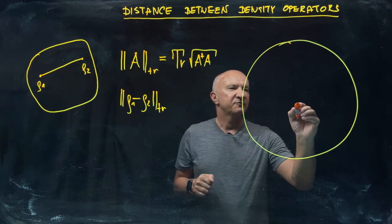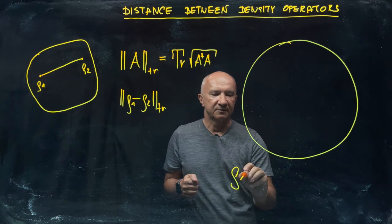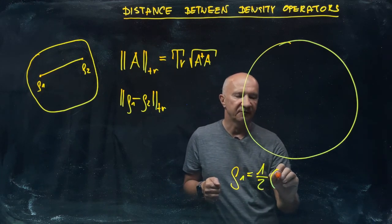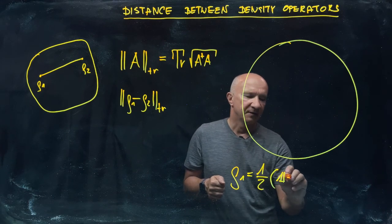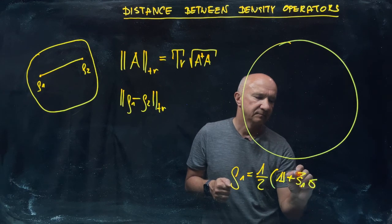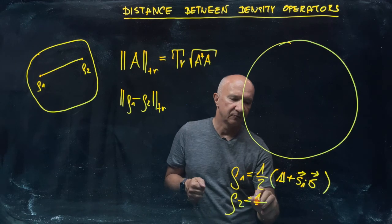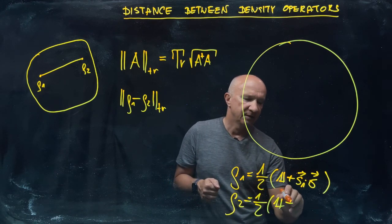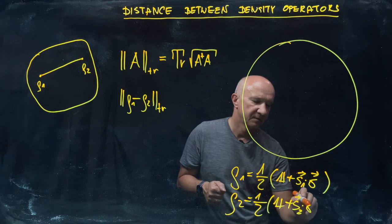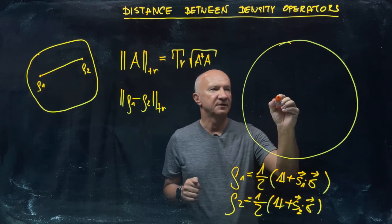Given a Bloch sphere, if I have density operators ρ₁ and ρ₂, you can parametrize them in terms of the Bloch vector. So ρ₁ is (1/2)(I + s₁·σ) and ρ₂ is (1/2)(I + s₂·σ). Those are the two Bloch vectors associated with density operators ρ₁ and ρ₂.